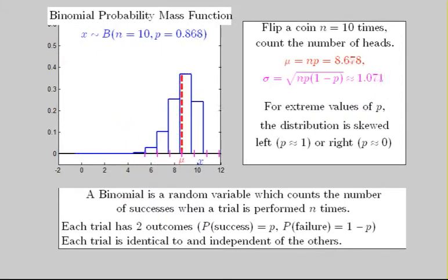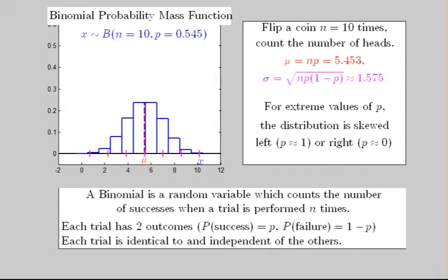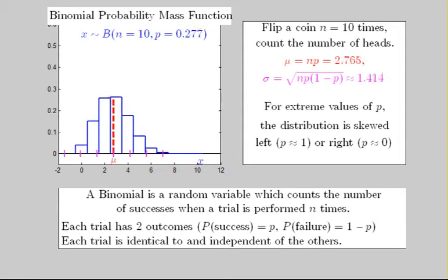For p near 1, such as 0.8 or 0.9, the distribution is skewed left. It is symmetric when p is near 0.5, and the distribution is skewed right when p is near 0.